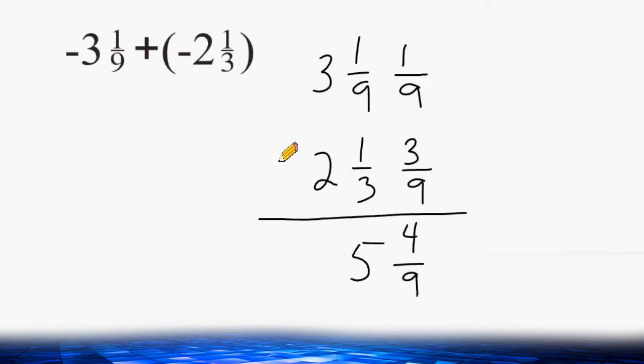Now remember, when you are adding a negative to a negative, the answer will remain negative. So the total is negative 5 and 4/9.